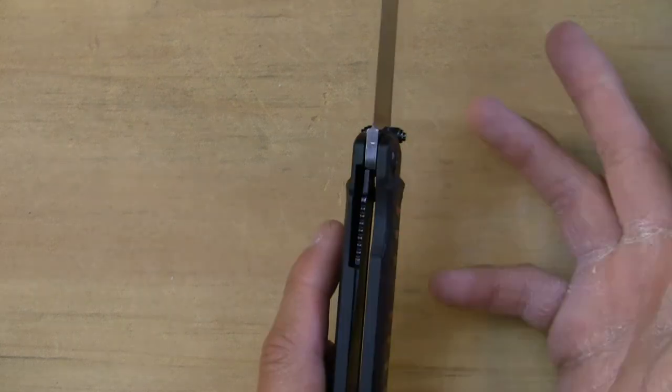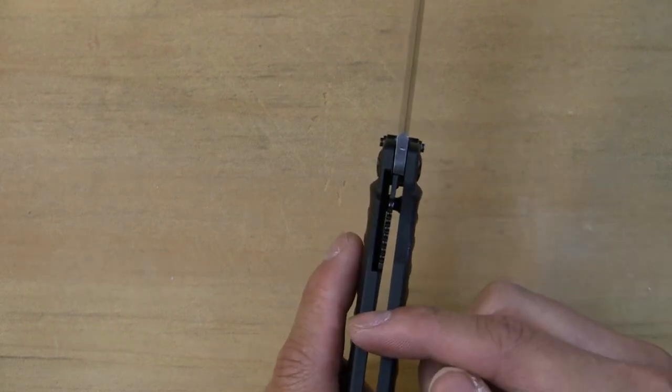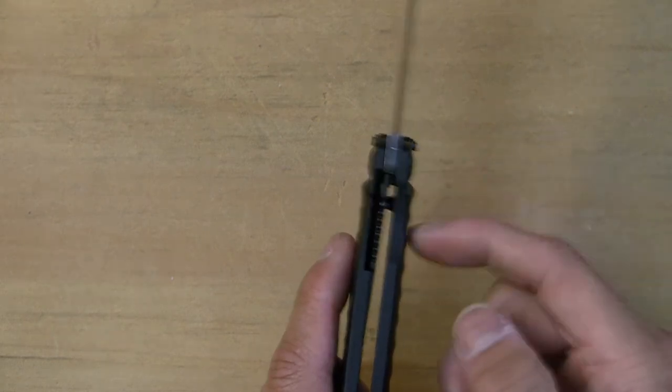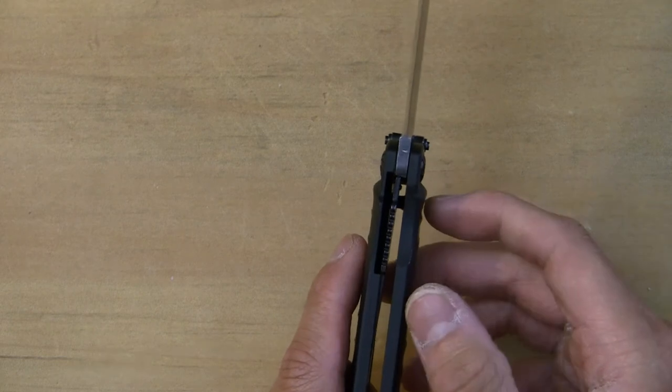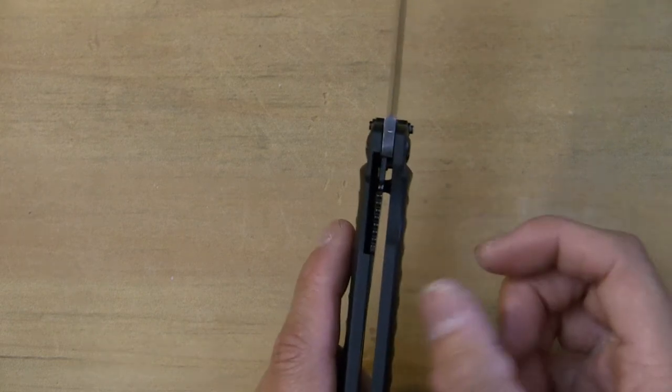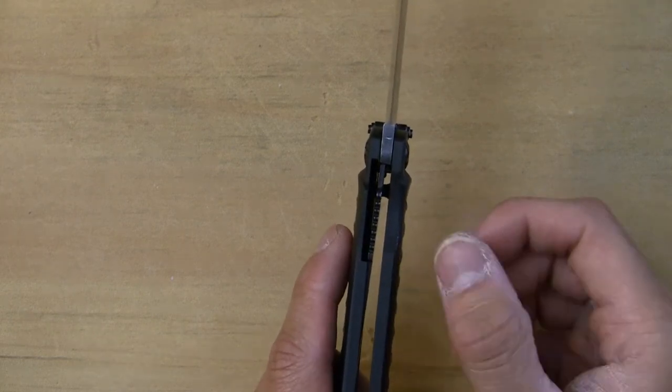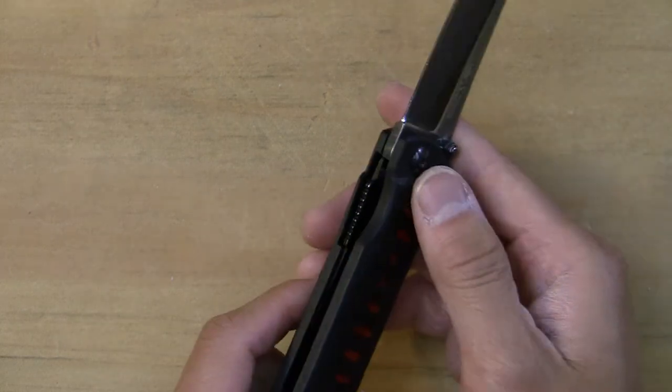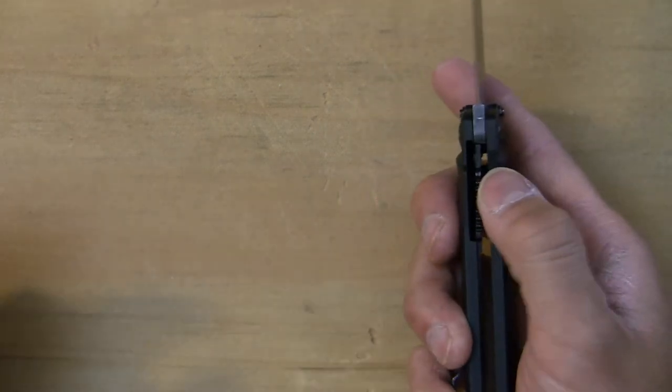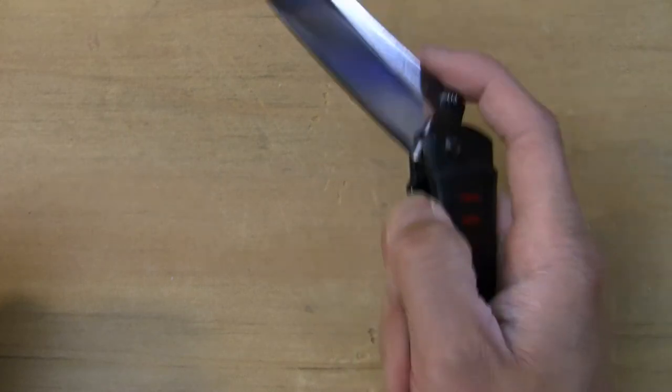And you can see they are nested liners. So this serves to make this G10 side completely lightweight. So you don't have a thick slab of G10 and then along with a slab of steel. So it does serve to reduce the weight and this knife is quite light for what it is. So again, deployment is excellent.